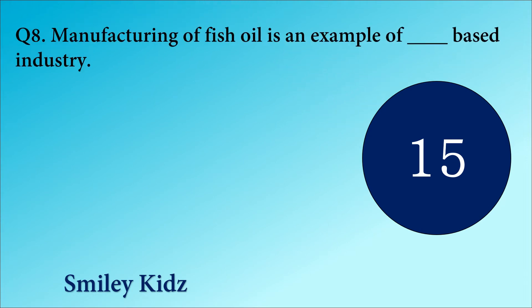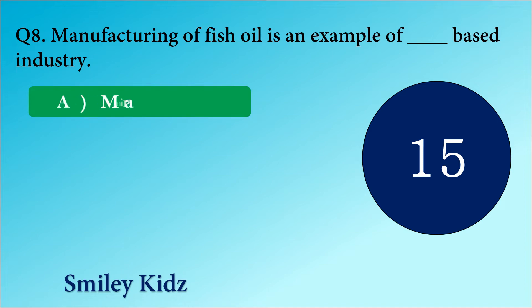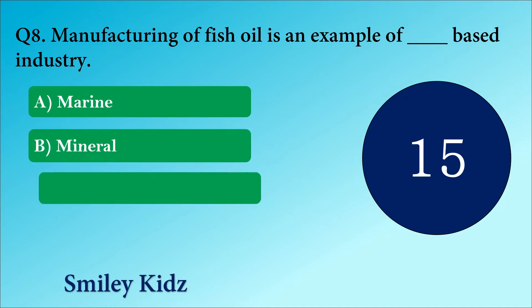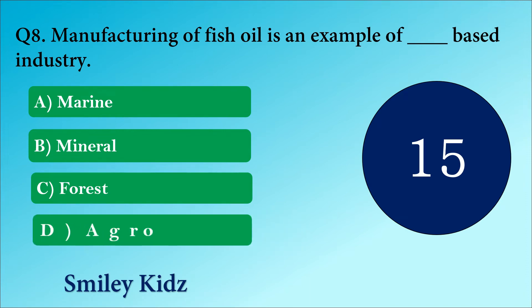Question number 8. Manufacturing of fish oil is an example of Dash based industry. The options are A. Marine, B. Mineral, C. Forest or D. Agro.